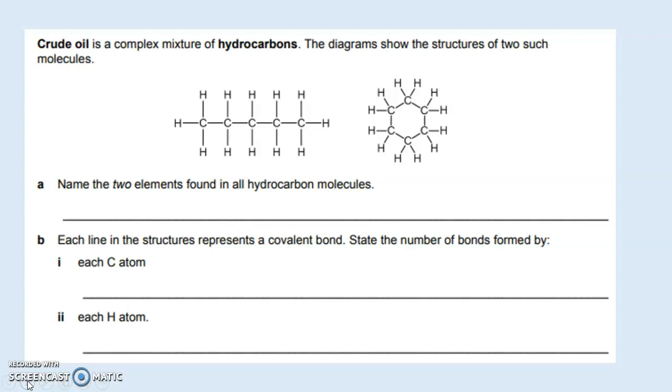Crude oil is a complex mixture of hydrocarbons. You've been given the diagram of two such structures. Name the two elements found in all hydrocarbon molecules. That's pretty straightforward. You've got the answer in the question itself. You can see that the compounds contain carbon and hydrogen, and it's also quite clear from the name itself. Hydrocarbon contains only carbon and hydrogen.